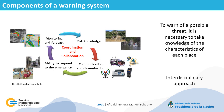The interrelationship of all these components requires coordination and collaboration between them, and the only way to do this is with an interdisciplinary approach. In this sense, in the National Meteorological Service of Argentina, for example, we have the Meteorology and Society Department, formed by social scientists who work in the coordination of these components.